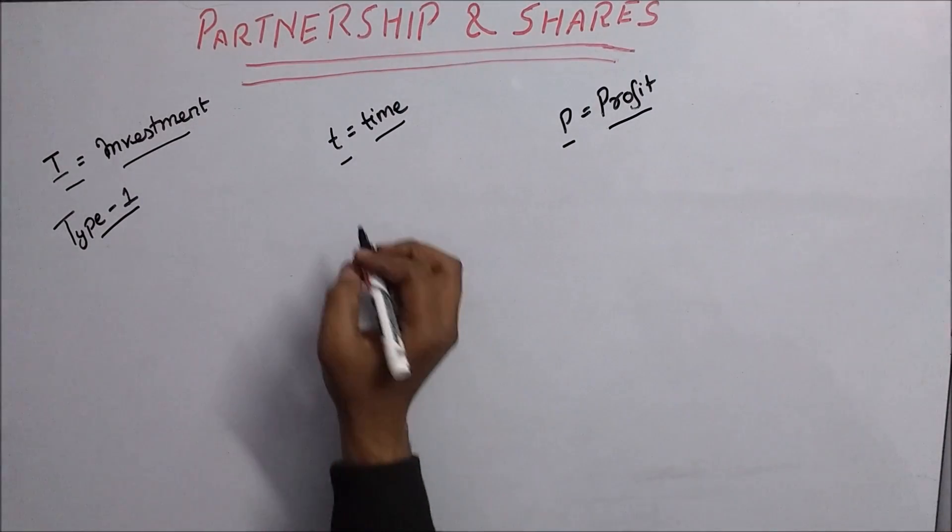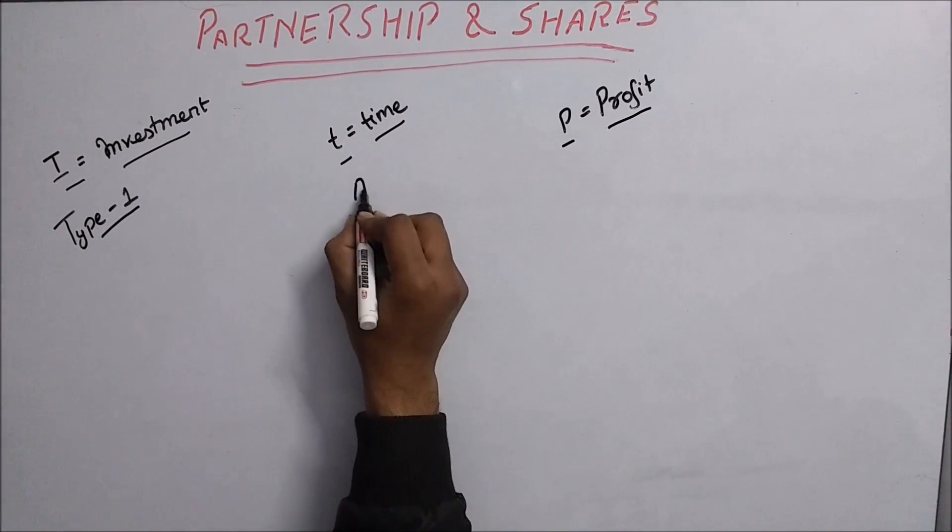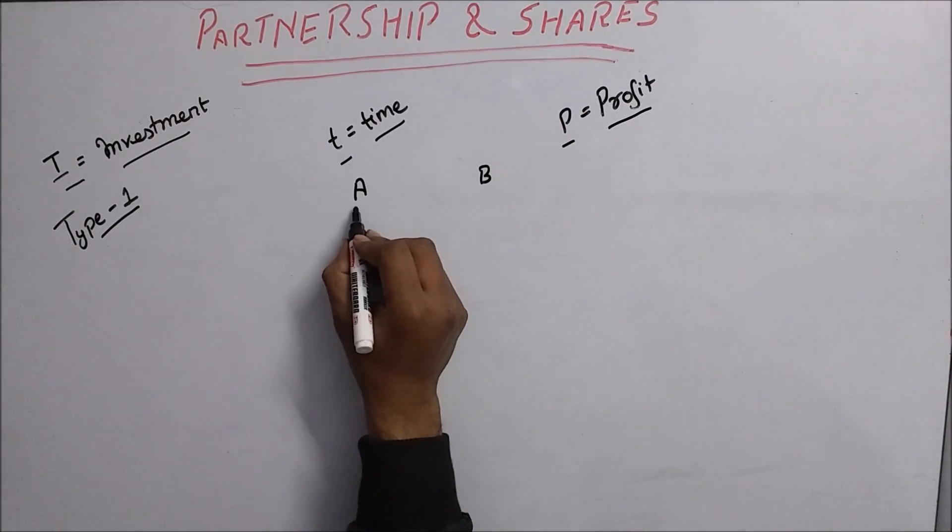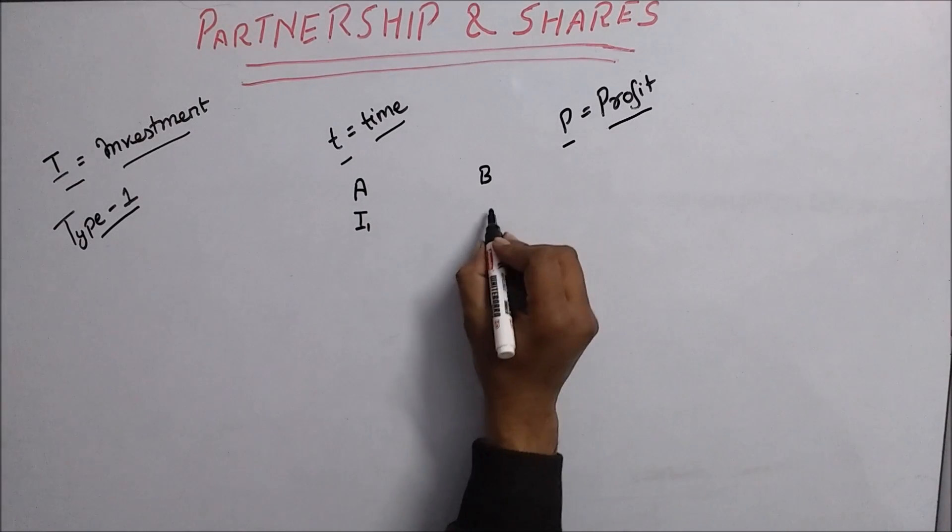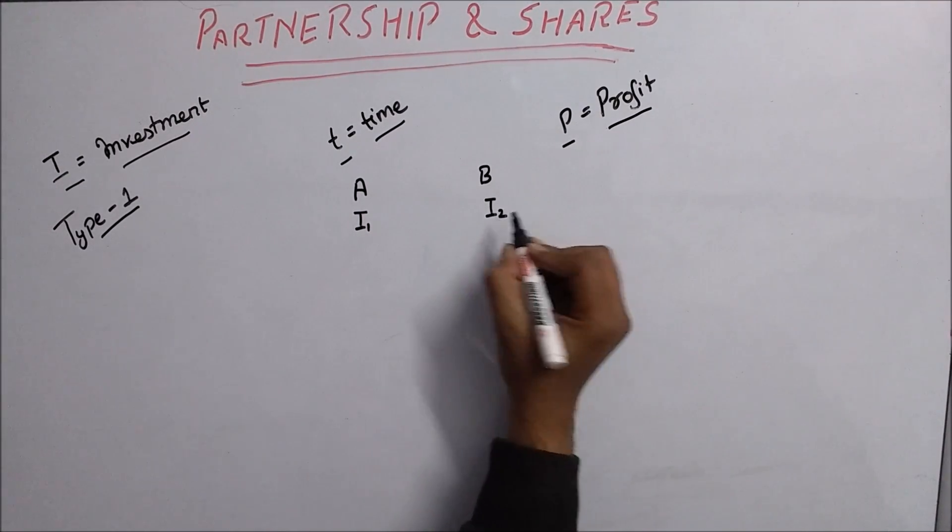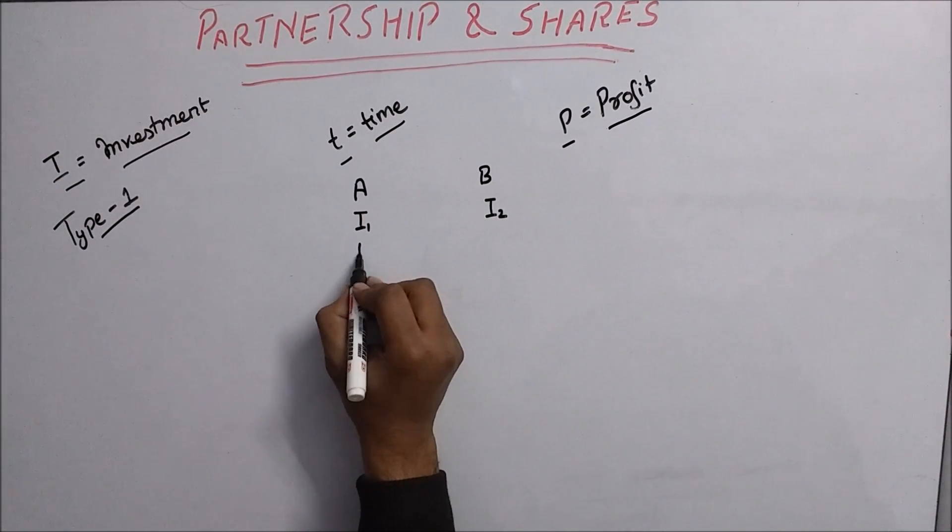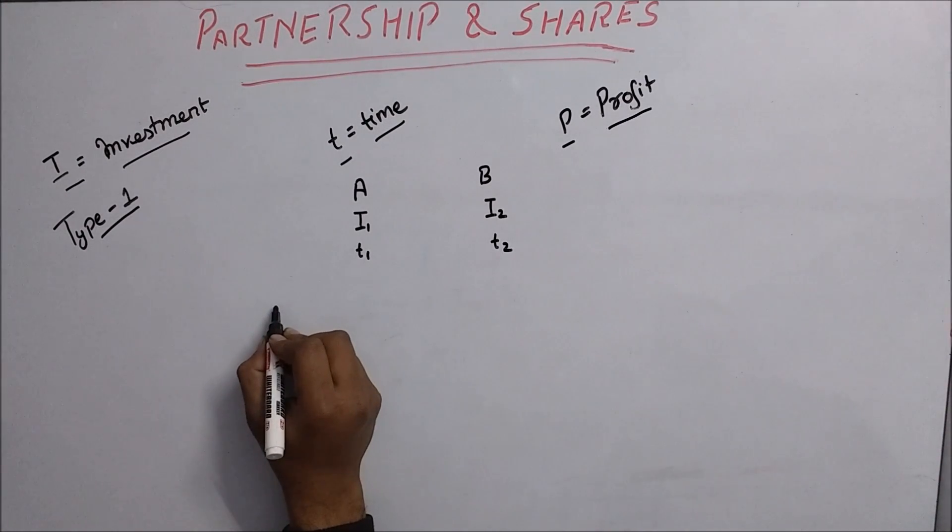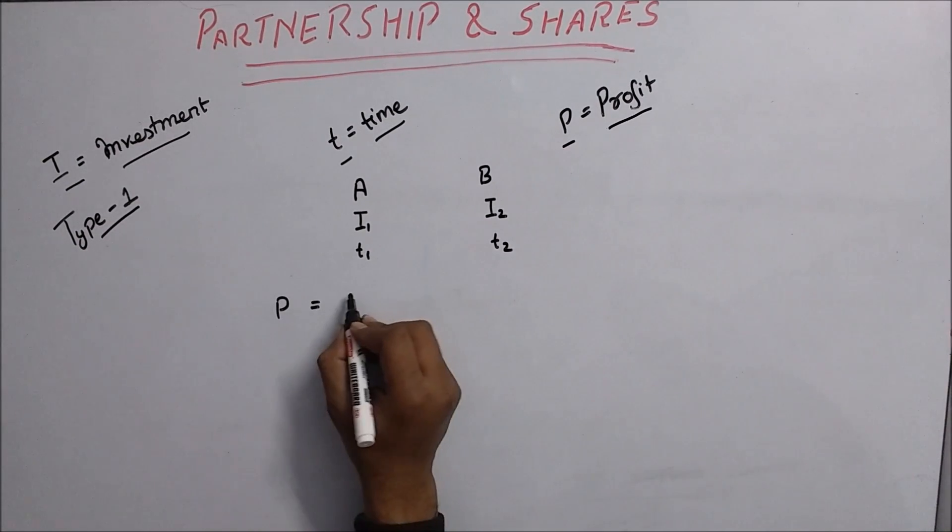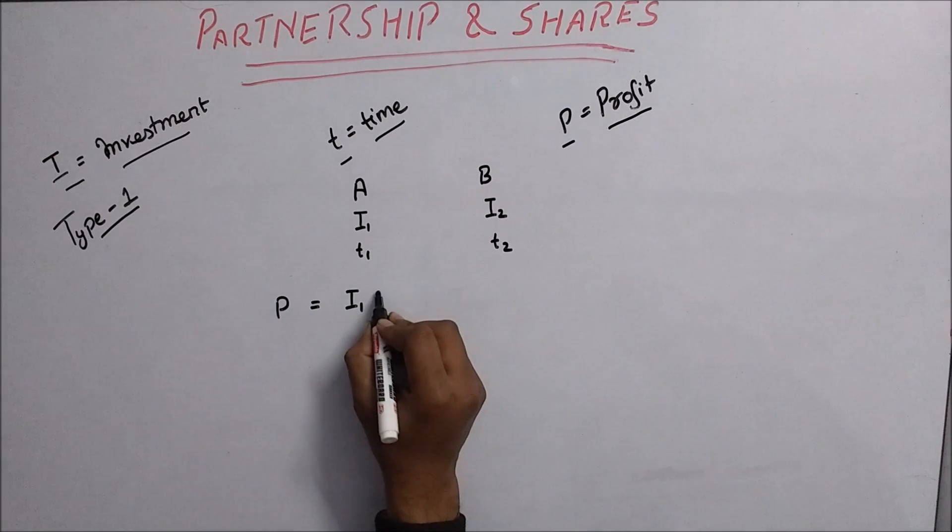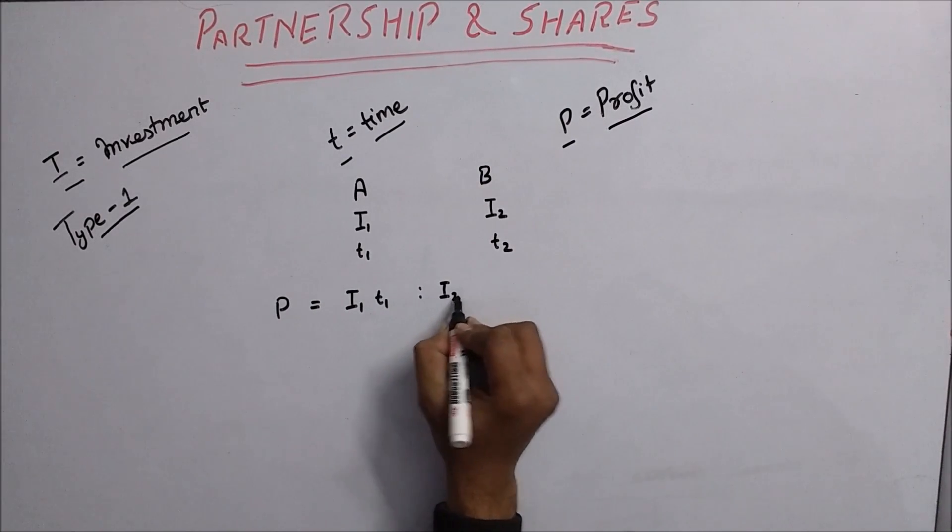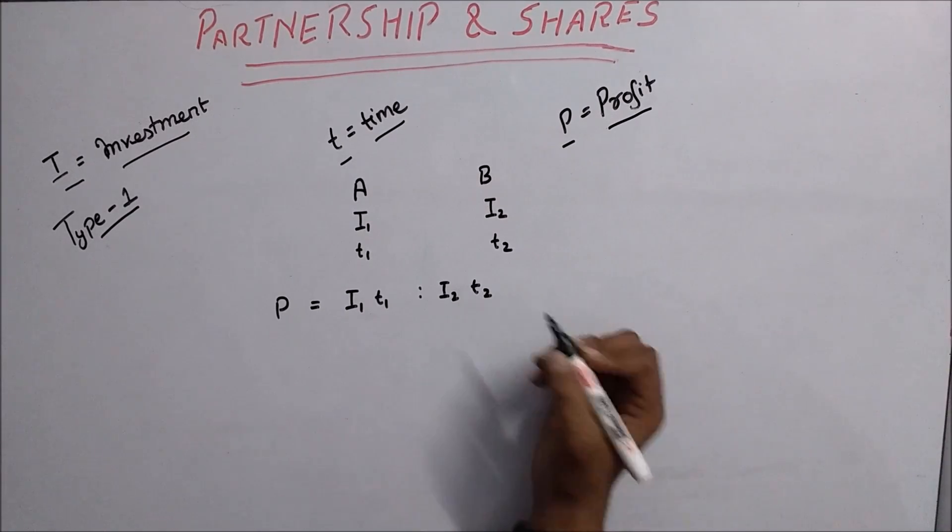Suppose there are two persons A and B who start a business with investments I1 and I2 for time T1 and T2.